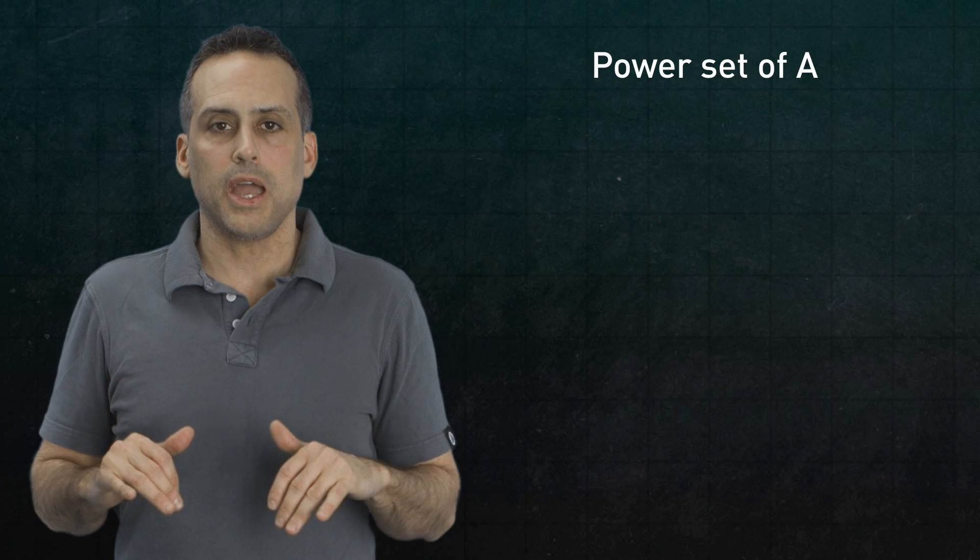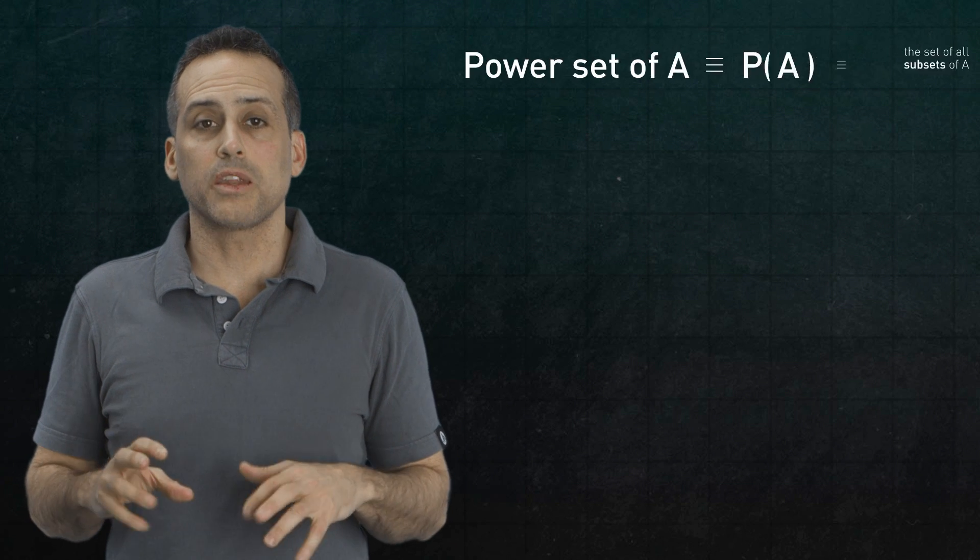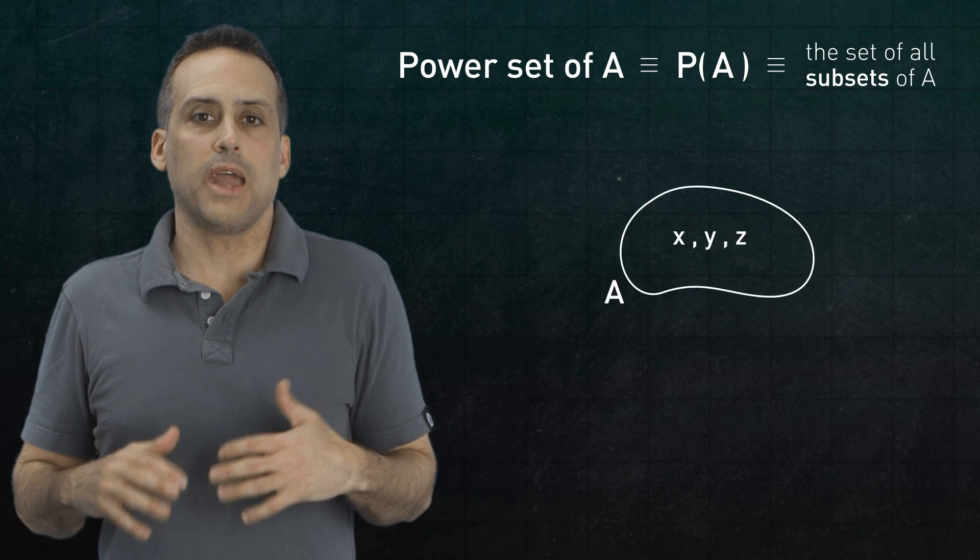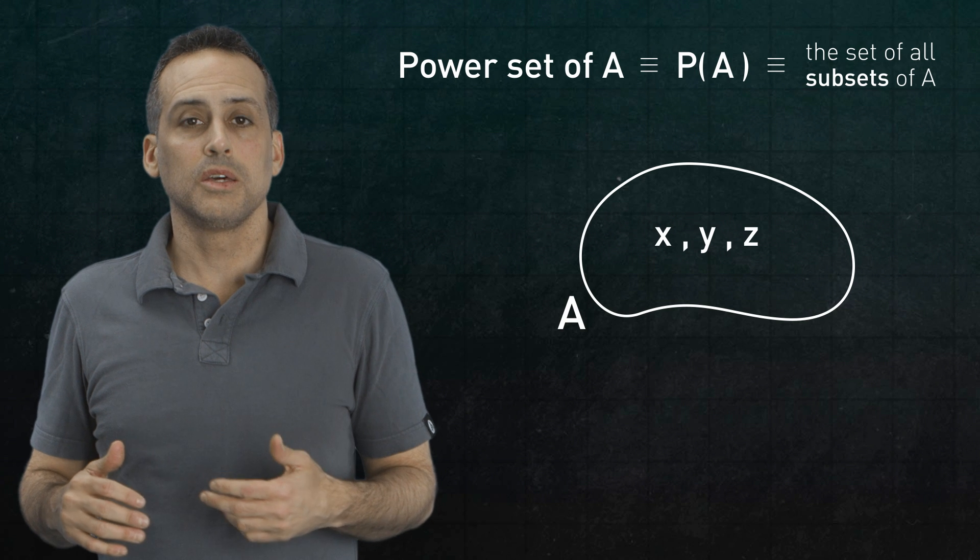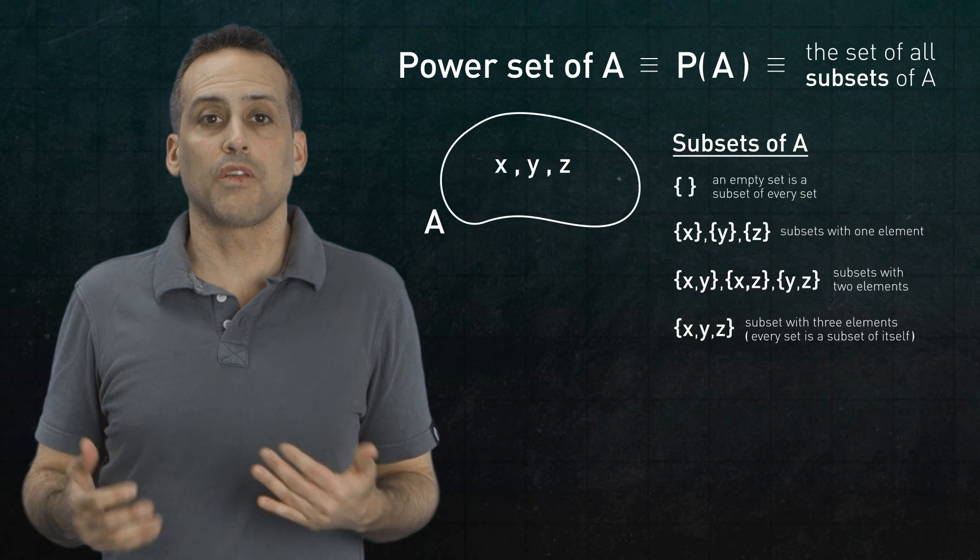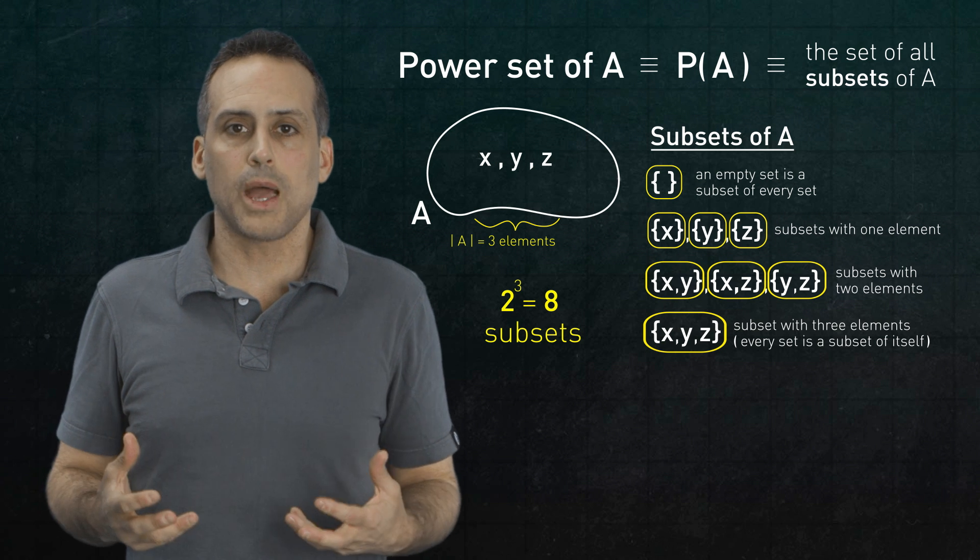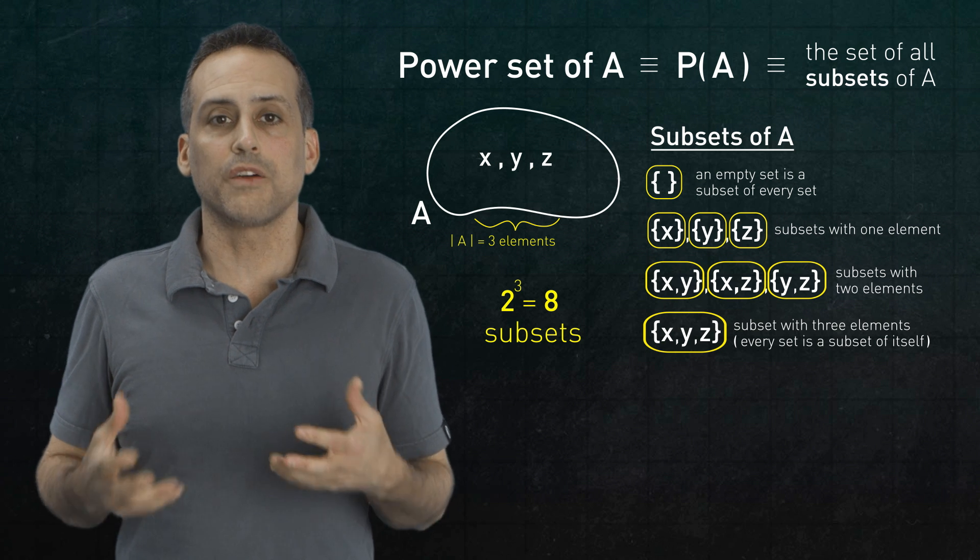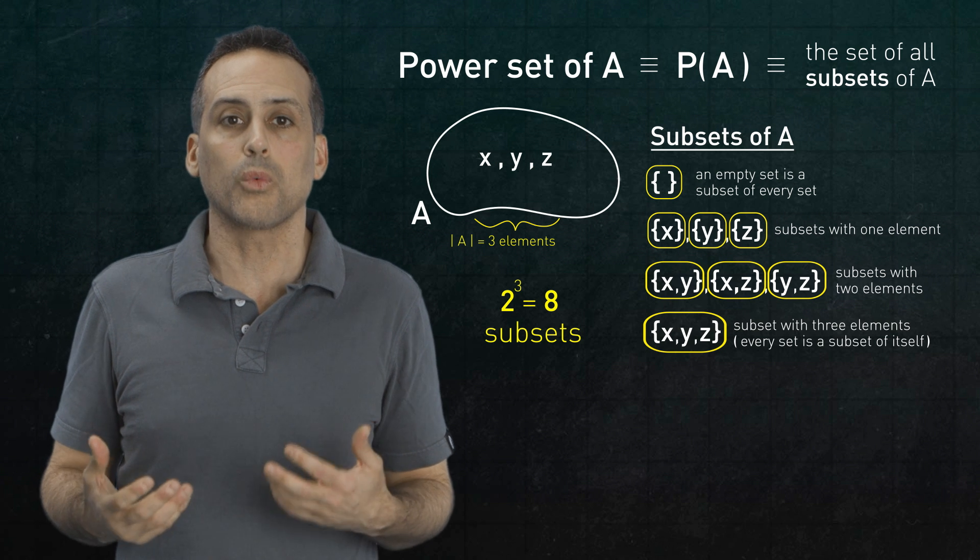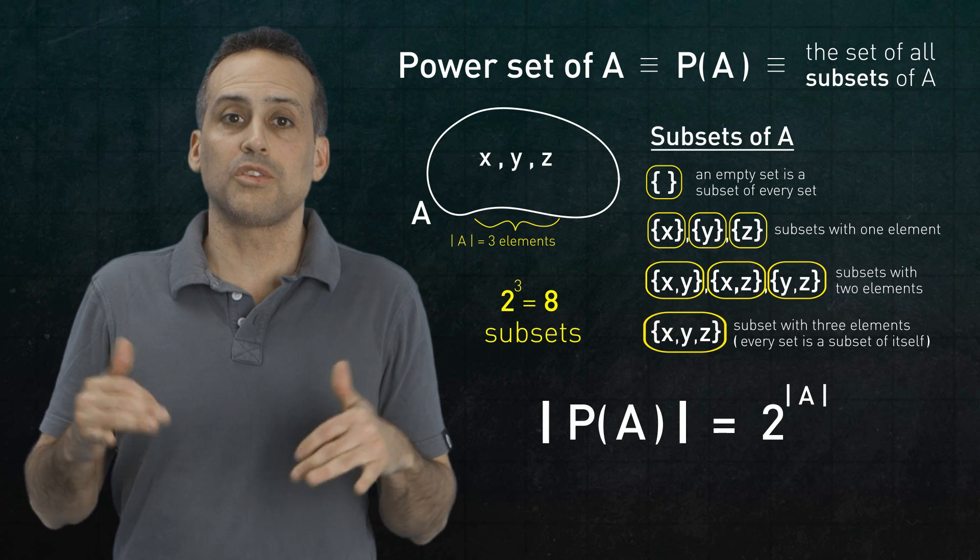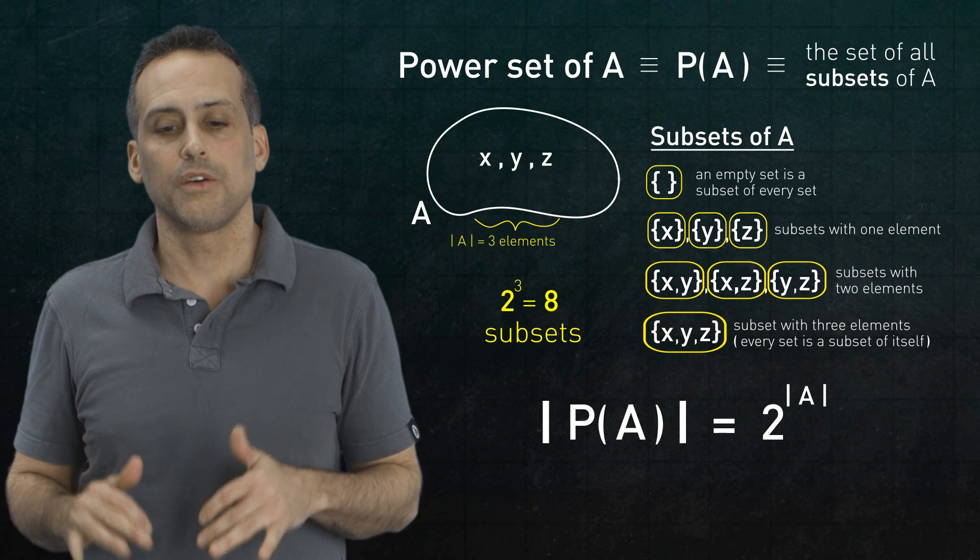Namely how the cardinality of a set A compares to that of its power set. The power set of A, which I'll denote P of A, is the set of all subsets of A, including A itself. So for example, if A is a set that has three elements called x, y, and z, then its power set will consist of the following 2 to the third, or eight, subsets of A. Now if you play with a couple more examples like this, and if you take cardinality of finite sets just to mean quantity in the ordinary sense of the word, it becomes pretty clear that the cardinality of the power set is just 2 raised to the power of the cardinality of the original set. Fine.